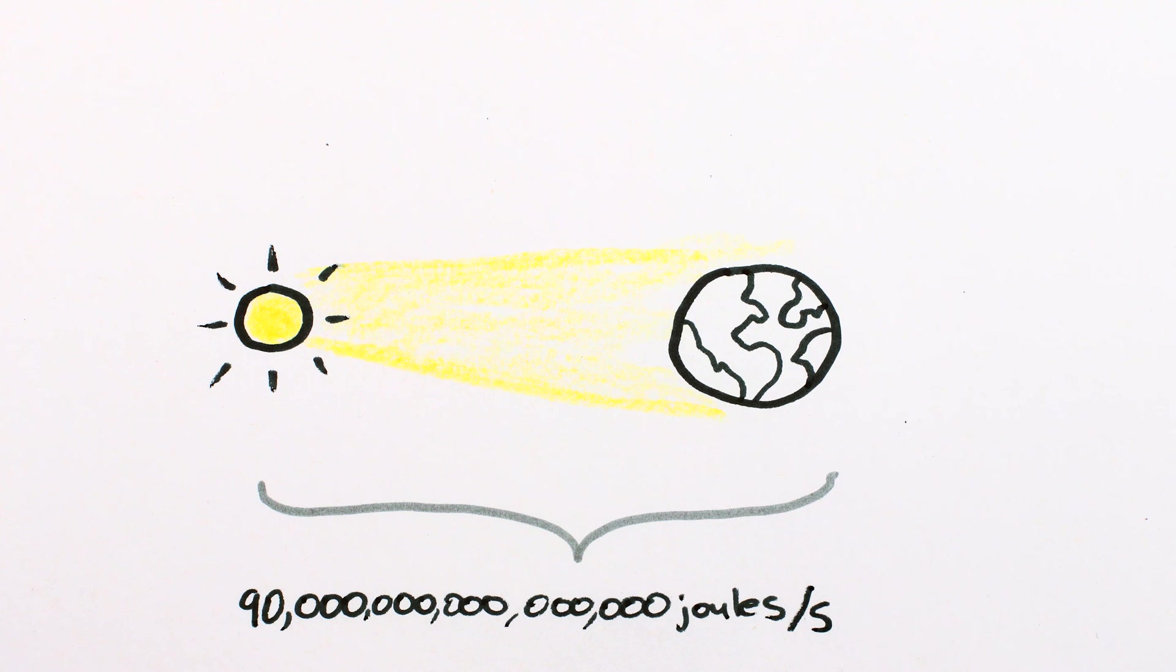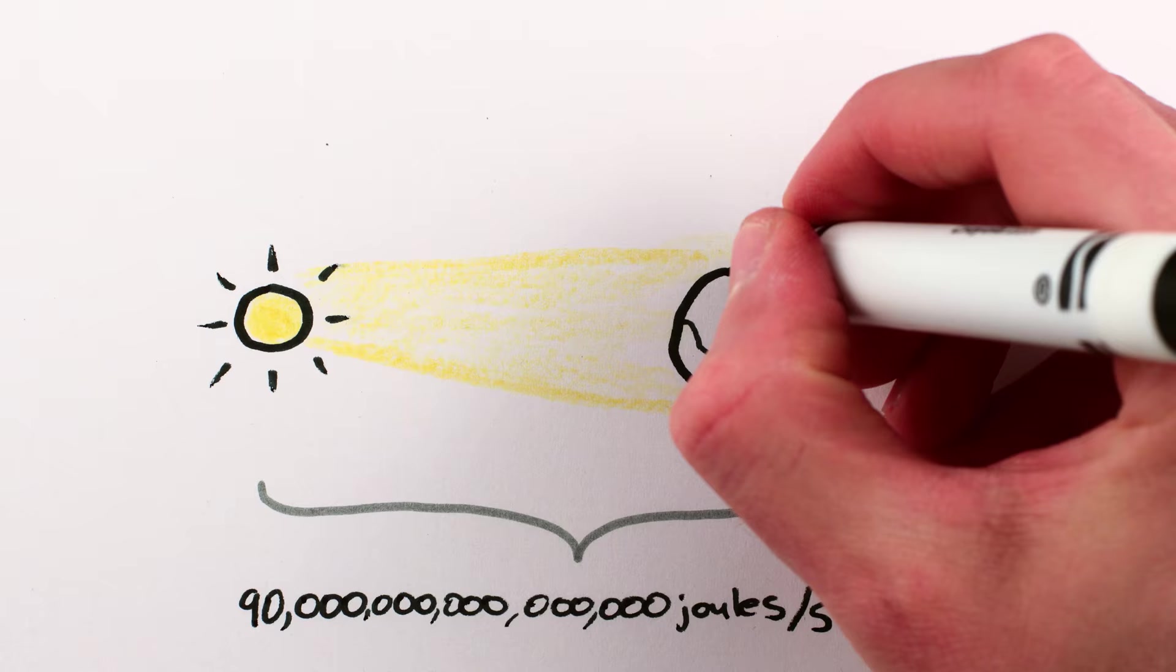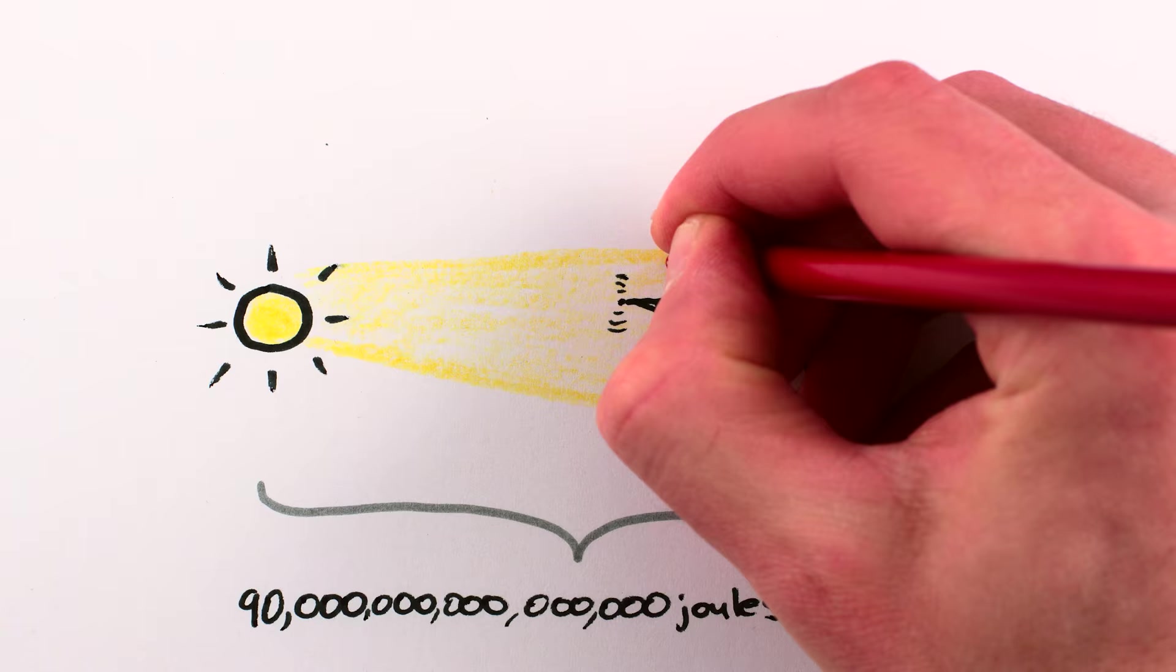The Earth receives about 90 petajoules of energy from the Sun every second. That's a lot, enough to satisfy all human energy needs thousands of times over.